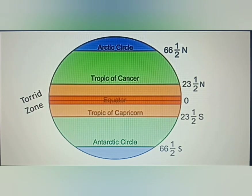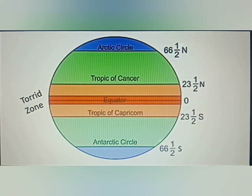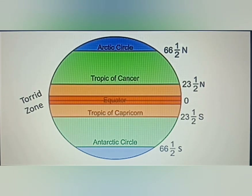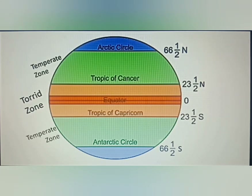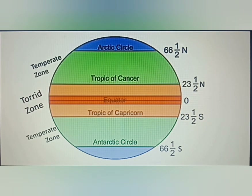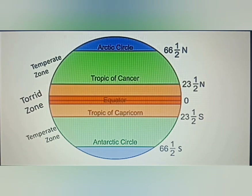Areas bounded by the Tropic of Cancer and the Arctic Circle, and the Tropic of Capricorn and the Antarctic Circle, have moderate temperatures and are called the temperate zone. Areas lying between the Arctic Circle and the North Pole in the Northern Hemisphere, and the Antarctic Circle and the South Pole in the Southern Hemisphere, are very cold because the sun does not rise much above the horizon. Its rays are always slanting and provide less heat, so these are called the frigid zone.